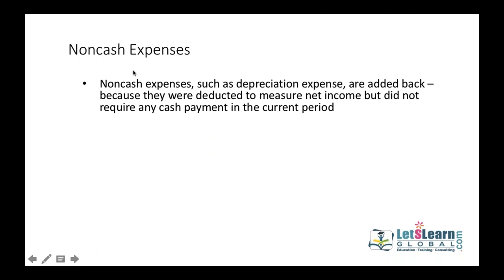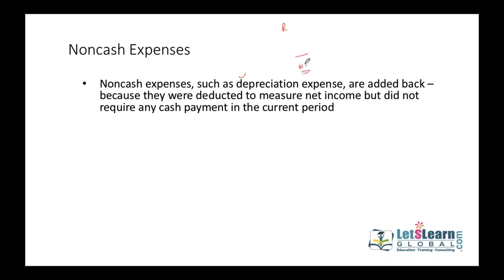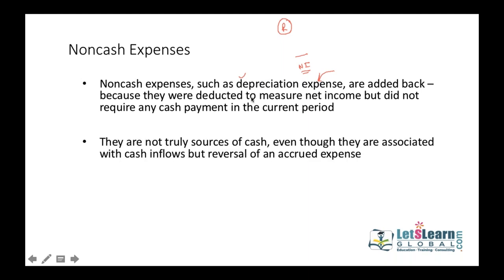The direct method simply summarizes all cash receipts from operations and all cash payments for operating expenses to give operating cash flow. However, non-cash expenses like depreciation, amortization, and loss on sale of assets reduced net income on the income statement even though there was no actual cash outflow. Therefore these non-cash expenses must be adjusted in operating activities since they do not represent any real cash payment.